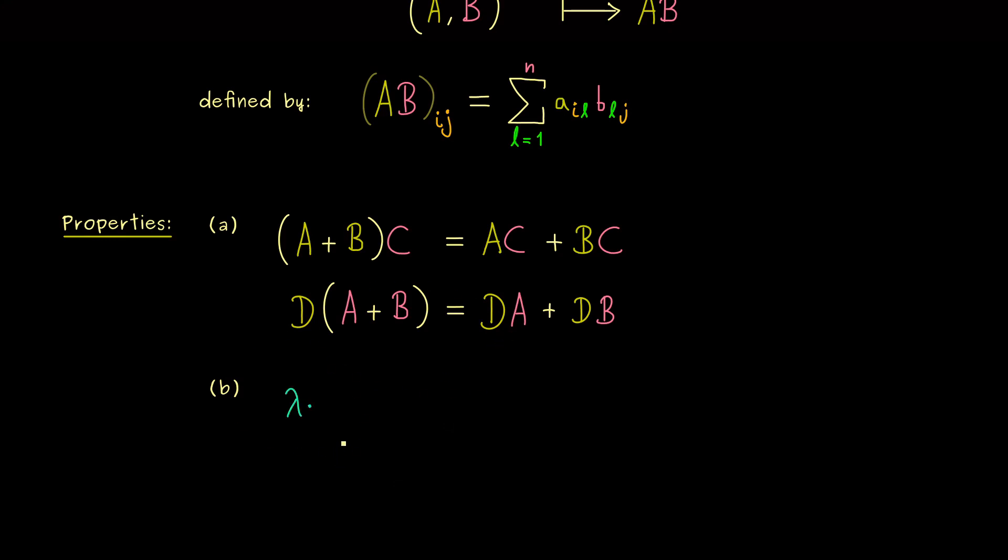Therefore, the next part here should tell us that the matrix product is compatible with the scalar multiplication. So we take a scalar, a real number lambda and multiply it with the matrix product.